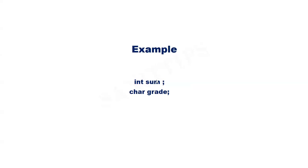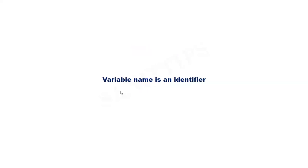Here we have declared sum as an integer variable. Usually, an integer variable takes up 4 bytes of memory, though this depends on the system being used. In the case of the char data type, one byte of memory will be allocated for the variable. We will have a detailed discussion on data types in C in a separate video.